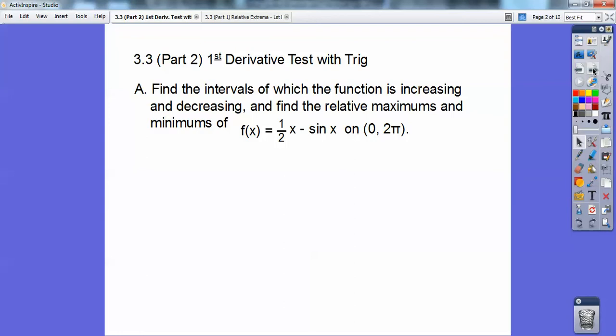Okay, so find the intervals on which the function is increasing, decreasing, and then find the relative maximums and minimums of f(x) equals one-half x minus sine x on the interval zero to two pi.